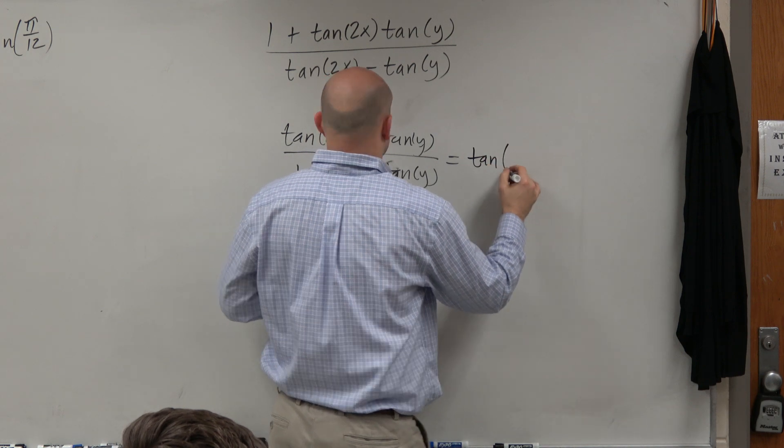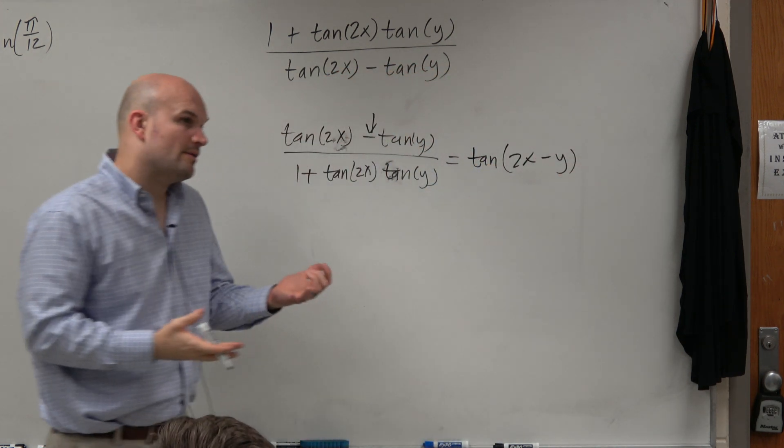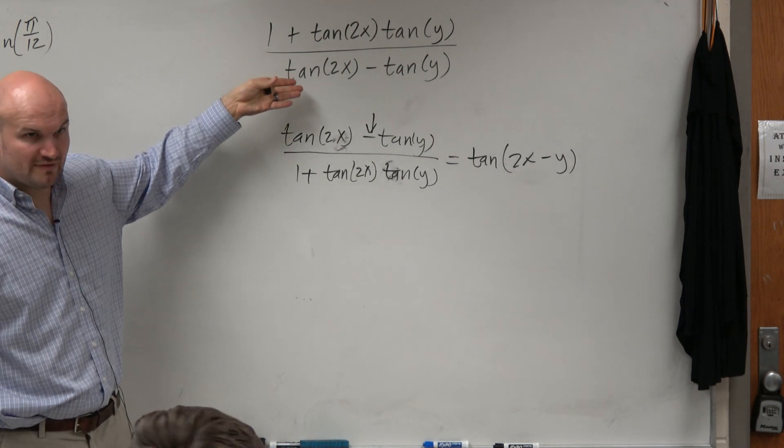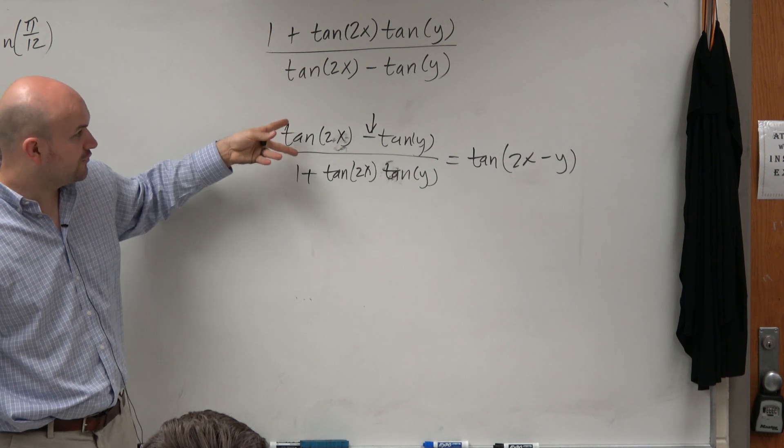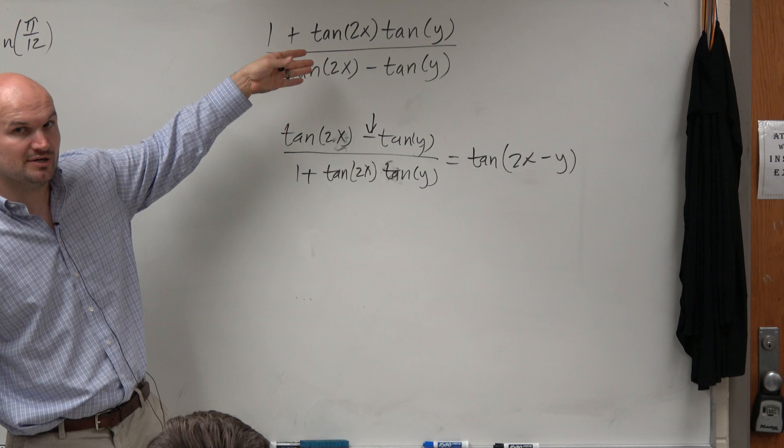So this is, again, this can be rewritten as tangent of 2x minus y. So what I want you guys to recognize is this is just the reciprocal of that, right? This is just the reciprocal of this. So if we know this, then the reciprocal of this then would produce, what is the reciprocal of the tangent?